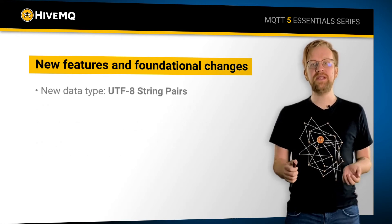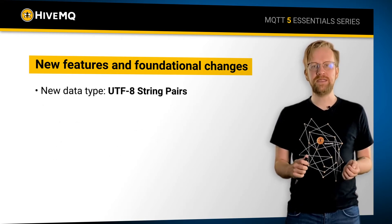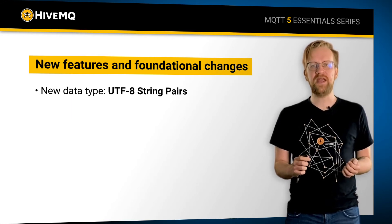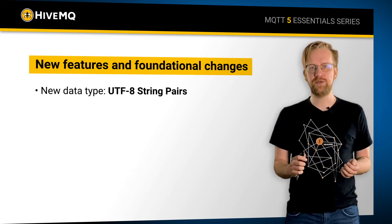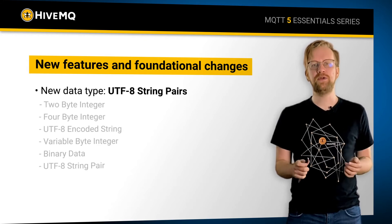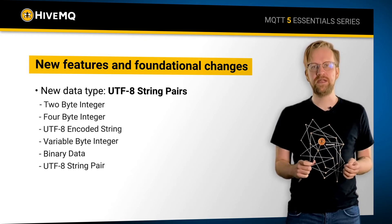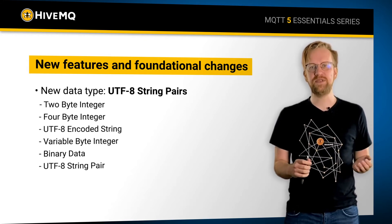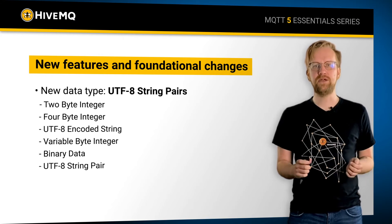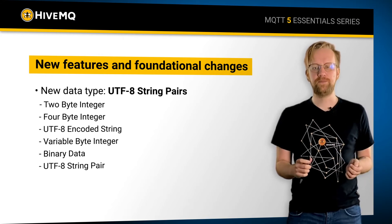To accommodate the user properties key-value pairs, the data type of UTF-8 string pairs got introduced, making the total amount of supported data types now 7. You can see the complete list here.